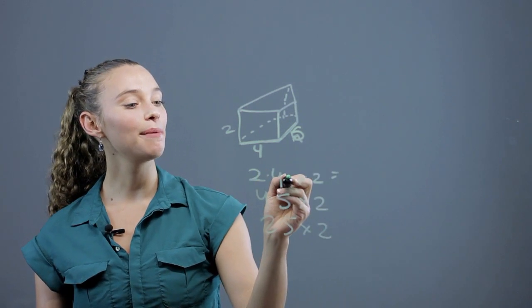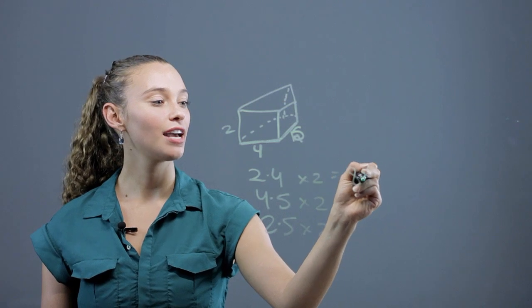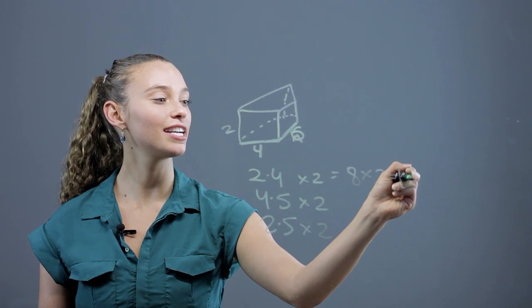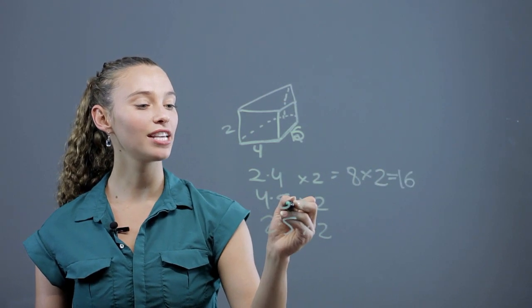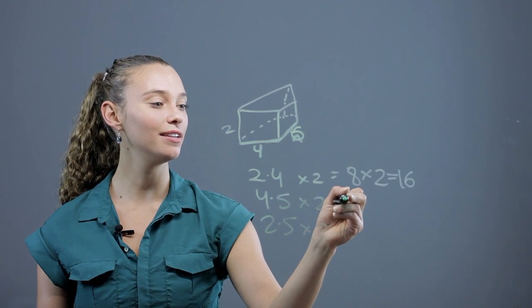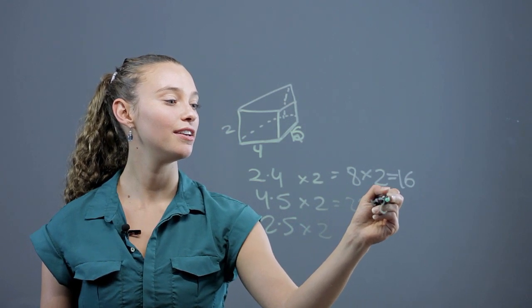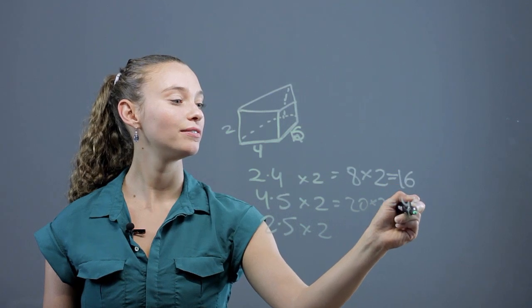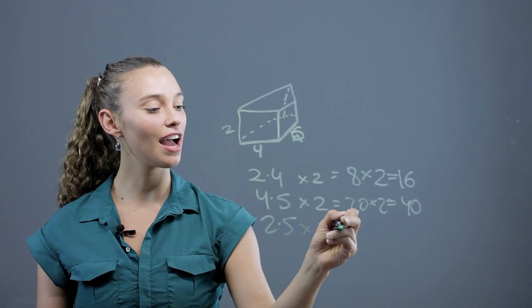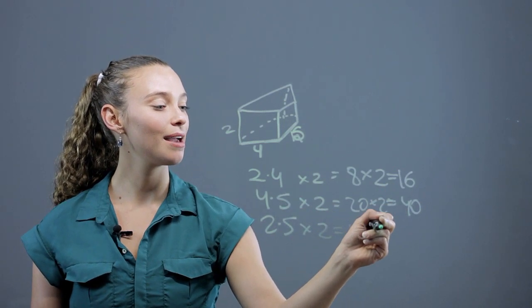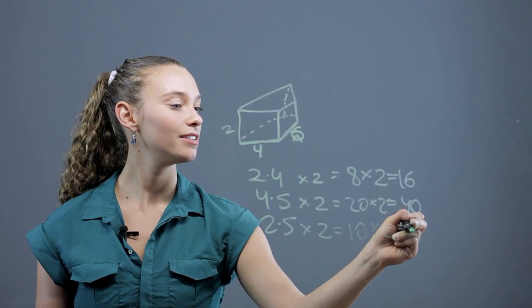We have two times four is eight, times two is sixteen. Four times five is twenty, times two is forty. And two times five is ten, times two is twenty.